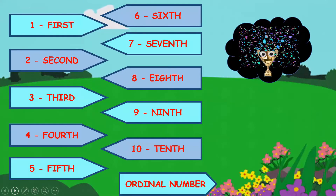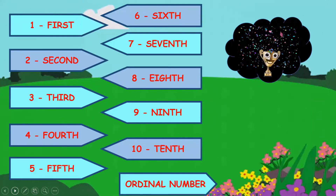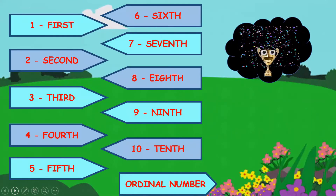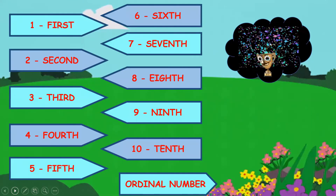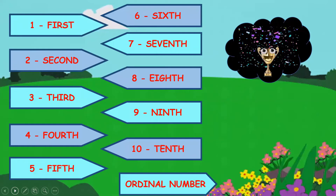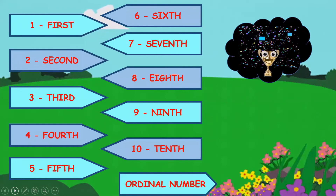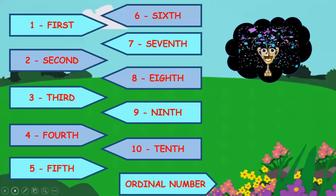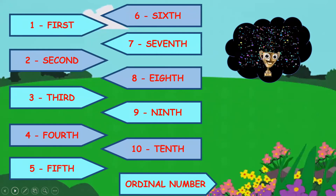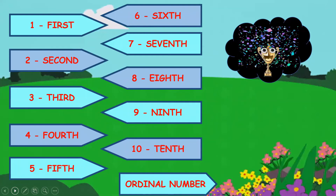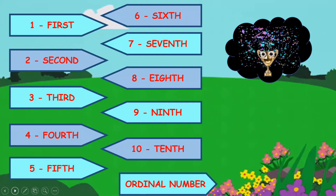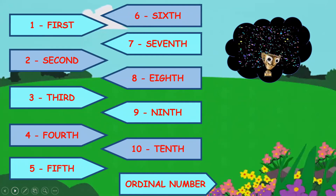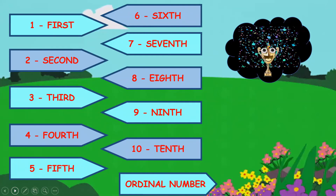These numbers define the position of the cardinal numbers. So remember, children — ordinal numbers always tell us the position of a given number.